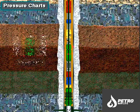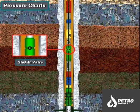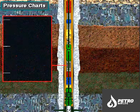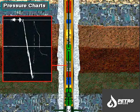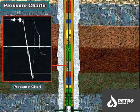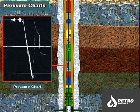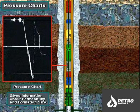After letting the well flow for the required time, the test crew closes the shut-in valve by rotating the drill string, stopping the flow of formation fluid. With flow stopped, formation pressure builds up inside the tool. This pressure buildup is recorded on a pressure chart in the tool. Later, the well owner examines the chart on the surface. The record of the pressure buildup rate gives information about the permeability and size of the formation.